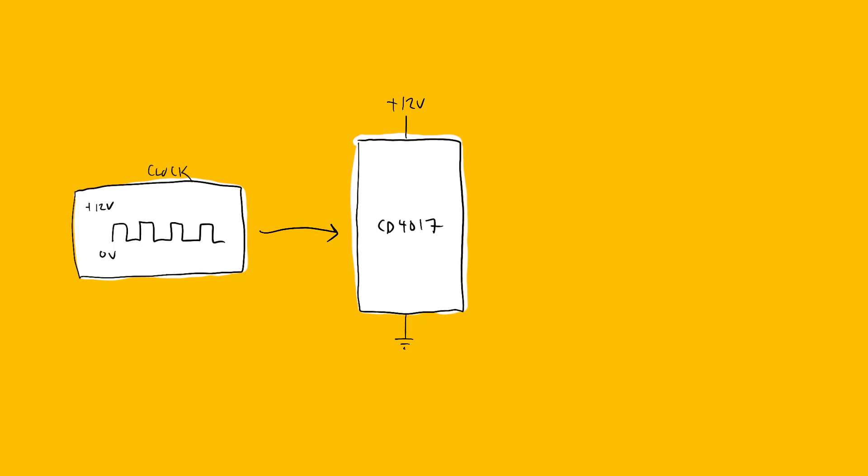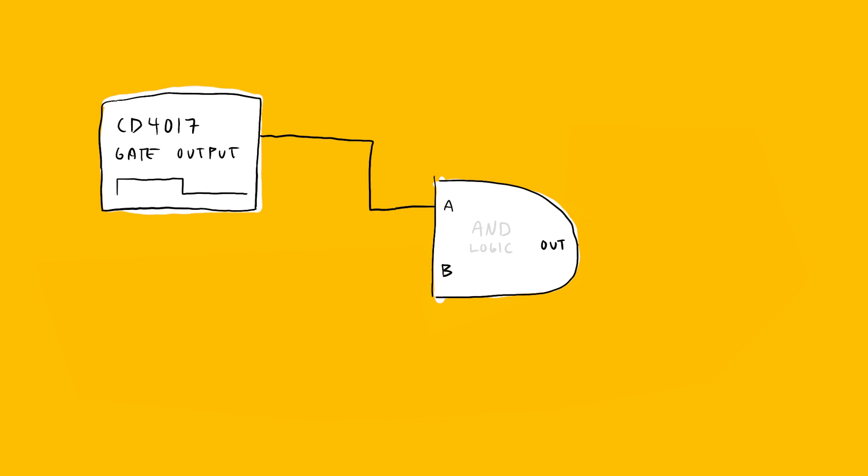Because if we only had the 4017 and let's say all the steps are active, then the output would be a constant high voltage. But then as we feed the output to an AND logic gate's input and then you feed your master clock to the other input, then the AND logic will kind of chop your gate output to individual gate outputs at every step and the length of the gate will depend on your clock's duty cycle.